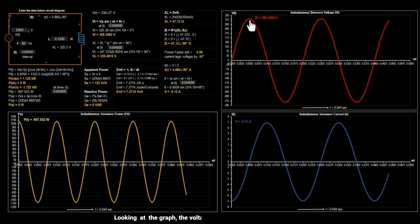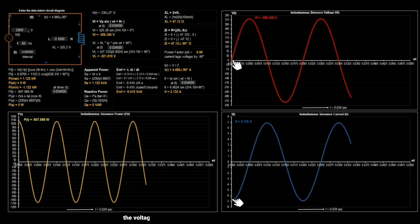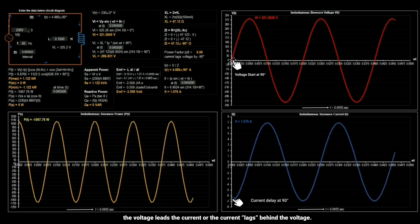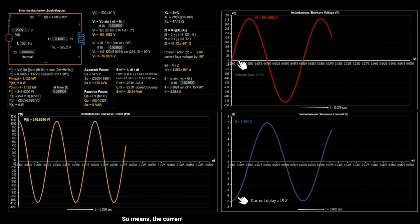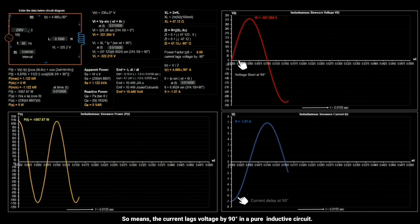Looking at the graph, the voltage sine wave and current sine wave, the voltage leads the current or the current lags behind the voltage. So means, the current lags voltage by 90 degrees in a pure inductive circuit.